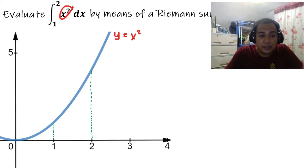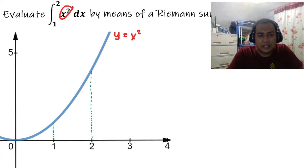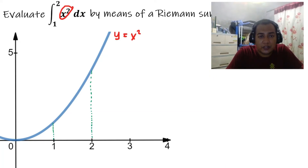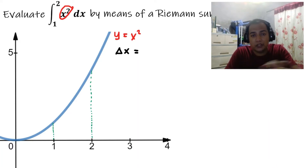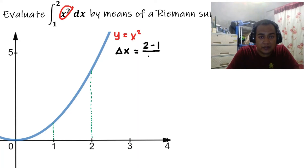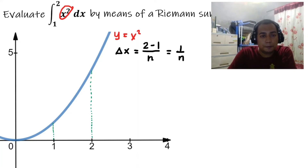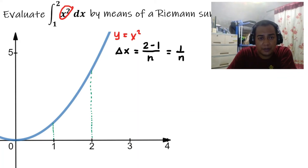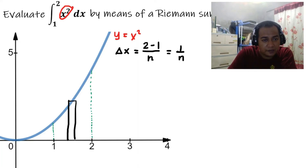To solve using Riemann sum, we construct rectangles. We already know the formula for delta x. If there are n rectangles between 1 and 2, then delta x equals (b minus a) over n, which is (2 minus 1) over n, so delta x equals 1 over n. We have a representative rectangle with an arbitrary x-coordinate z sub i.